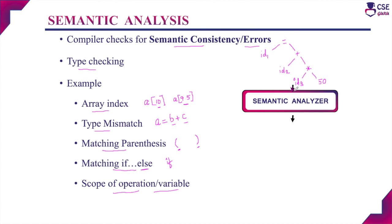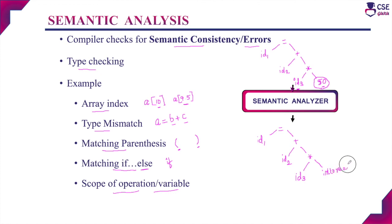For example, in the parse tree, if 50 is a constant integer and id3 is a real value, the semantic analyzer will detect the type mismatch and convert the constant 50 to a real value — that is, int_to_real(50) — before performing the multiplication. The output of the semantic analyzer is also a parse tree, with semantic errors rectified and reflected in the tree.